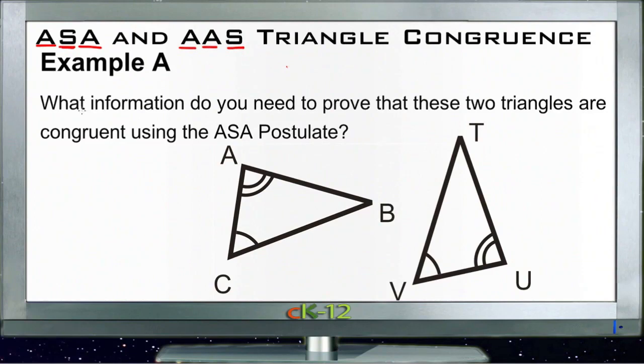So for our first example A, it says what information do you need in order to prove that these two triangles are congruent using the angle-side-angle postulate? So in order to use that one, we need to have two angles and a side in between them that are all congruent.